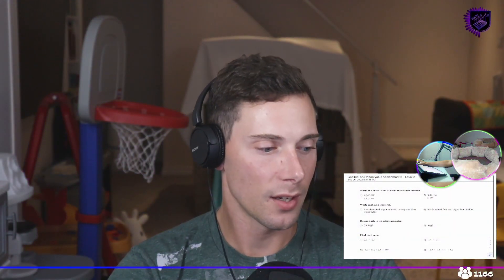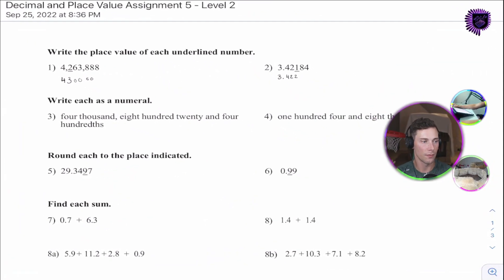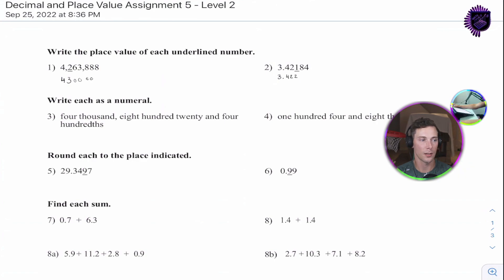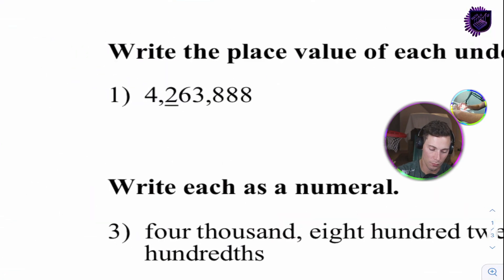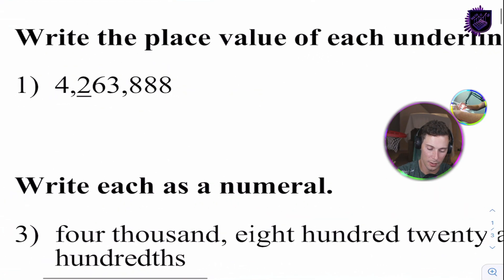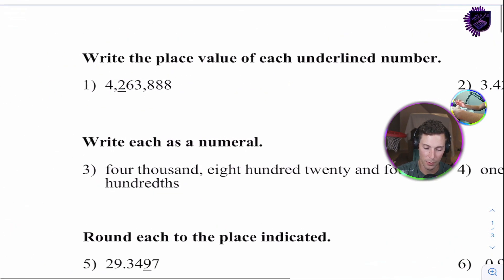Now, today's assignment is a basic assignment that reviews the past four assignments that we've done. So, without further holdup, let's get into it. And right off the hop, it says, write the place value of each underlined number. Remember,